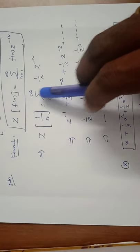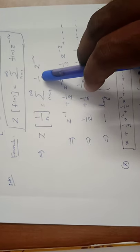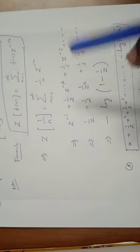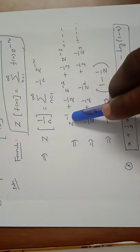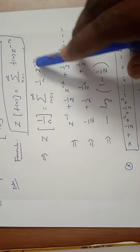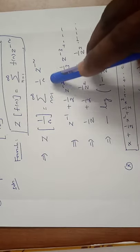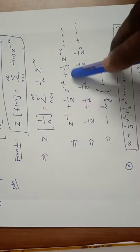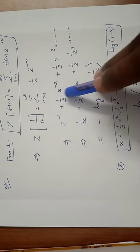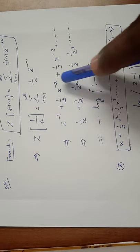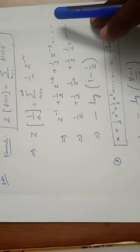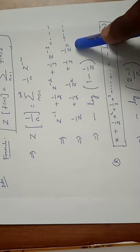Expanding the series: put n=1, we get z to the power minus 1; put n=2, we get (1/2) z to the power minus 2; put n=3, we get (1/3) z to the power minus 3, and so on. This gives 1/z plus 1/(2z squared) plus 1/(3z cubed) and so on.